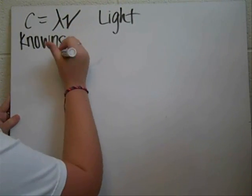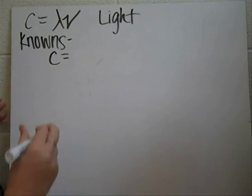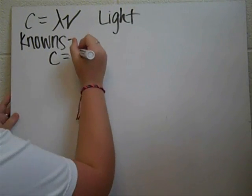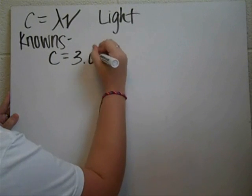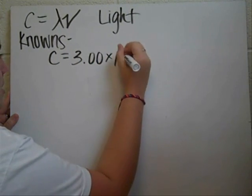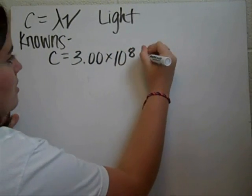And so our knowns are going to be C, which is a constant, and it's always 3.00 times 10 to the 8th meters per second.